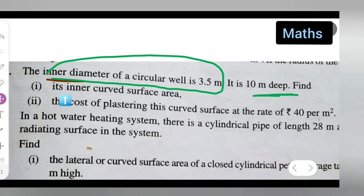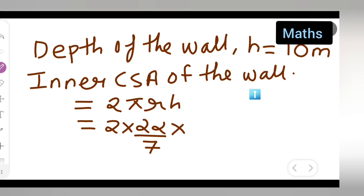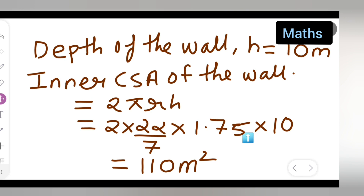The inner curved surface area of the well uses the cylinder formula for curved surface area. Multiply 2 × (22/7) × r × h, that is 2 × (22/7) × 1.75 × 10. The answer you get is 110 meter square. Solve it and you will get 110.